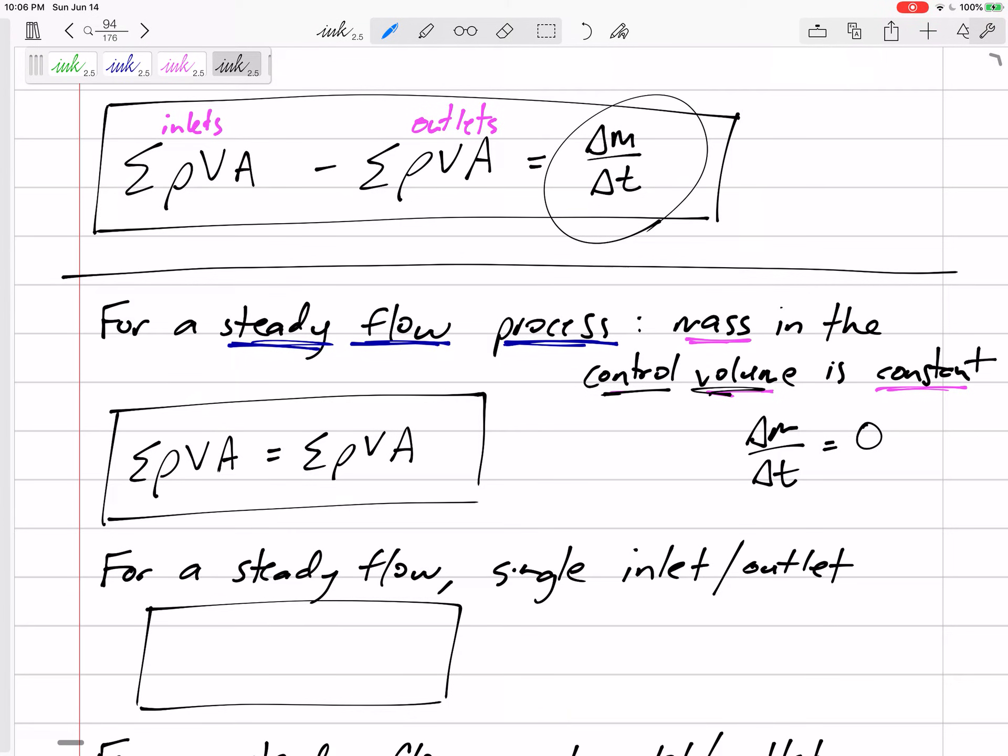So our conservation of mass becomes that equation right there. The rho VA of the inlet plus rho VA of this inlet plus rho VA of this inlet equals rho VA of the outlet, rho VA of the outlet. So that makes sense for steady flow devices that aren't collecting any mass. Mass is not changing. All the mass going in equals all the mass going out.